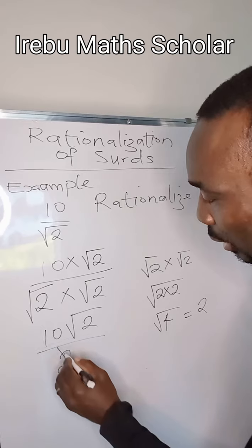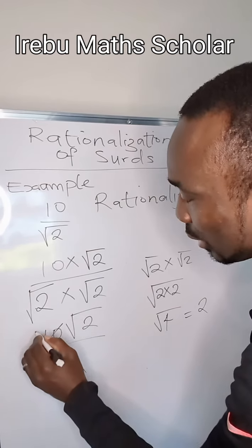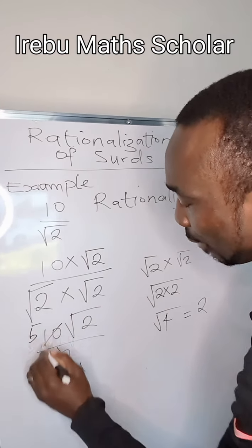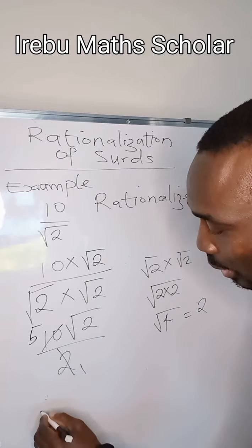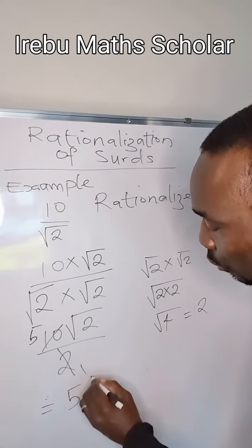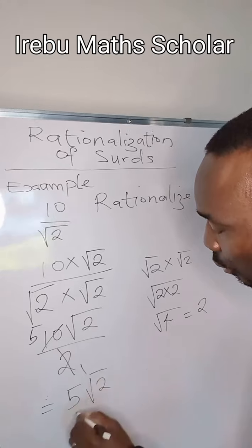Finally, 2 can cancel out. 2 into 10, we're going to have 5. Therefore, our final answer will be 5 root 2.